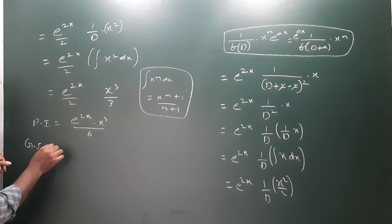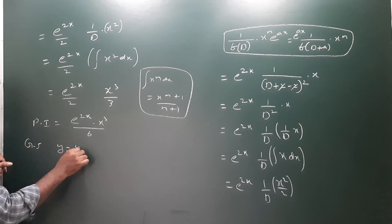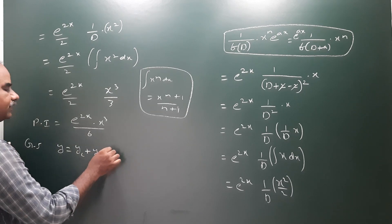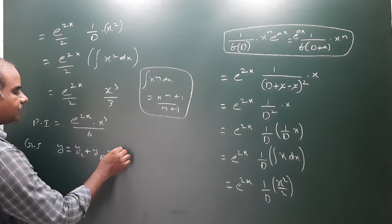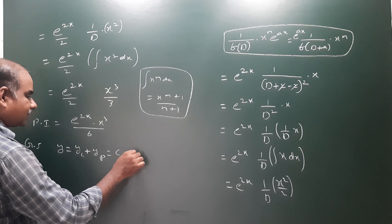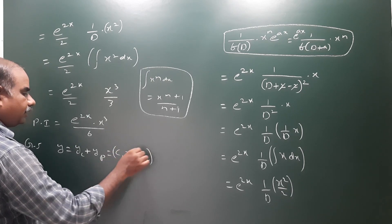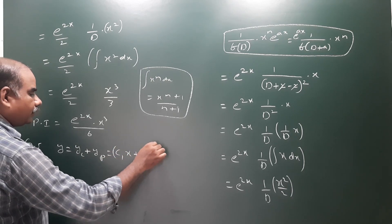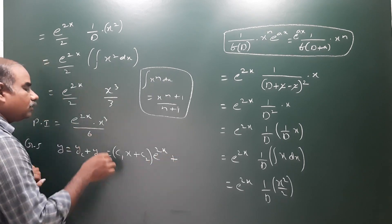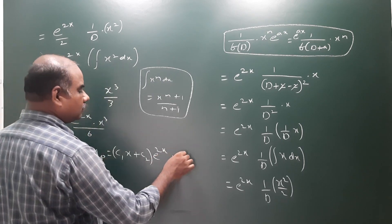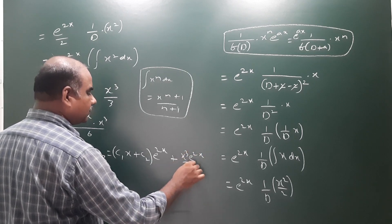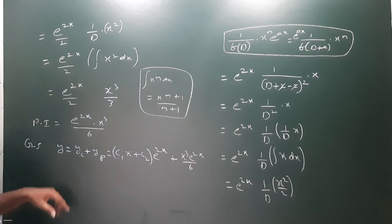Therefore, the general solution is y = y_C + y_P, where y_C = (c₁ + c₂x)·e^(2x) and the particular integral is x³·e^(2x)/6. So that is the answer.